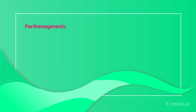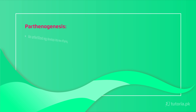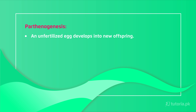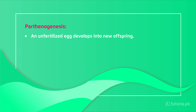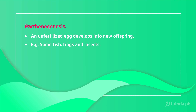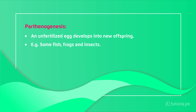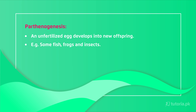The next method of asexual reproduction is parthenogenesis. Parthenogenesis is defined as the development of an unfertilized egg into a new offspring — that is, no male has fertilized the egg. Some fish, frogs, and other organisms can reproduce through parthenogenesis.